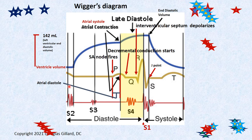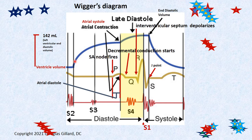We also get the AV valve slamming shut, which is the S1 heart sound. The ventricle is now empty — about as empty as it gets — and we are in diastole. When systole is over, the heart relaxes and the S2 heart sound can be heard. Those are the semilunar valves pressure-closing. Then slowly the left ventricle starts to fill up with blood again, and to fill it all the way up, atrial systole occurs.